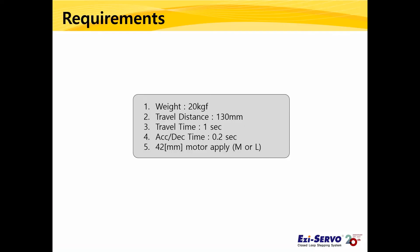The following box is an example of customer requirements. Weight is 20 kg, travel distance is 130 mm, travel time is 1 second, and acceleration/deceleration time is 0.2 seconds. The customer will apply a 42 mm size motor and wants M or L motor length.